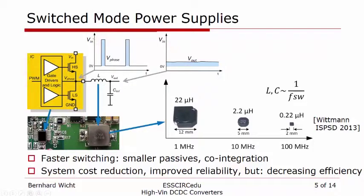The trend goes towards shortening the energy storing time, which means switching at a faster rate. Going from the current state of the art of around one megahertz switching towards 100 megahertz, the components get so small that they can eventually be integrated — co-integration, on-chip integration — there are several approaches. This brings a lot of advantages on the system side, but with the increase in switching frequency, we also see an increase in losses. So power efficiency is one of the major challenges.